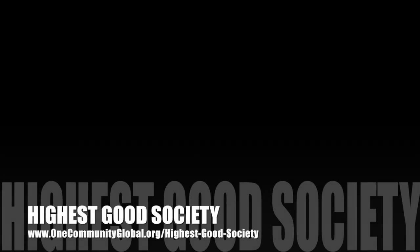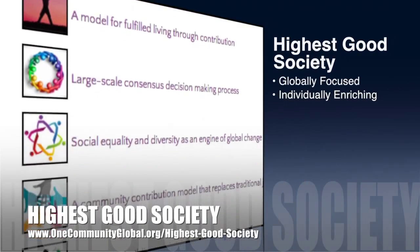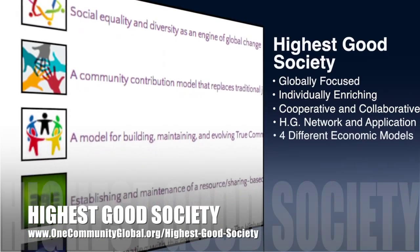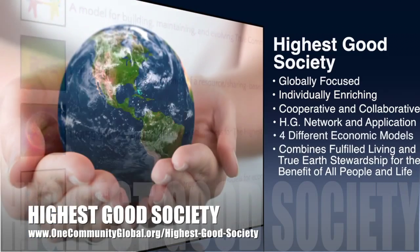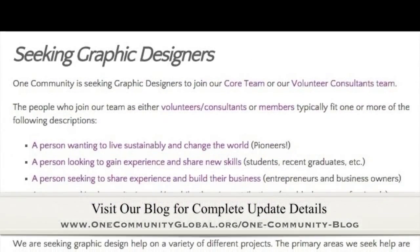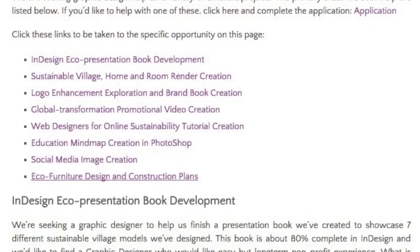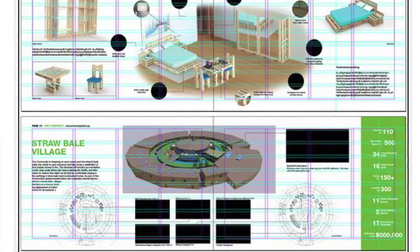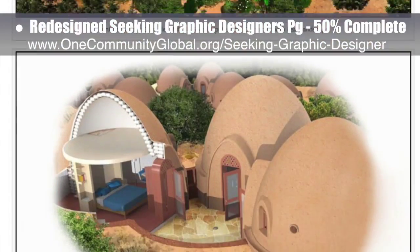The OneCommunity approach to Highest Good Society is globally focused, individually enriching, cooperative and collaborative, includes a Highest Good network and application, four different economic models, and combines fulfilled living and true earth stewardship for the benefit of all people and all life on this planet. This last week, the core team began updating all our Help Wanted pages and online marketing campaigns, with initial focus on web and graphic design help — finishing all ads for graphic designers and 50% of redesigning the Seeking Graphic Designers page.